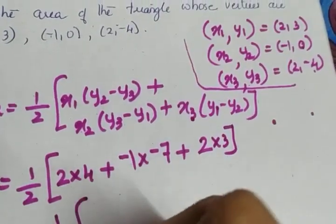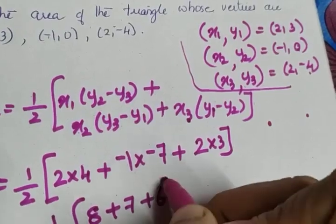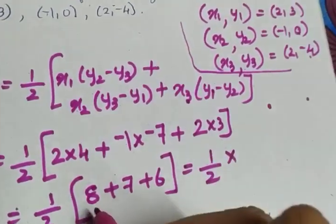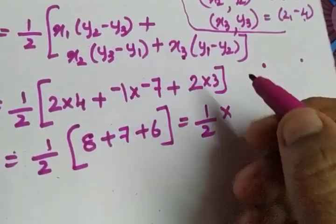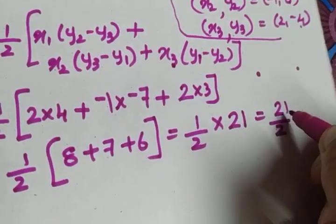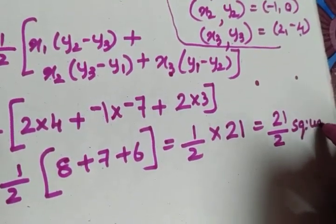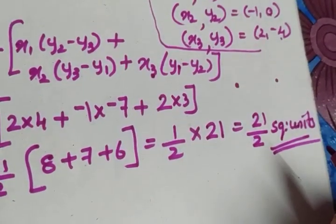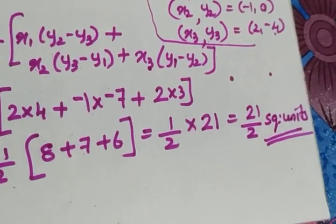That gives us half into: 2 times 4 = 8, plus (−1 times −7) = 7, plus 2 times 3 = 6. So half into (8 + 7 + 6) = half into 21. We didn't get a negative sign, so the area is 21/2 square units.